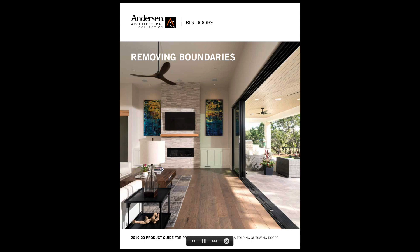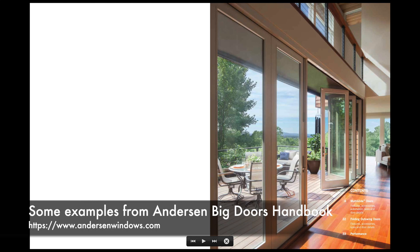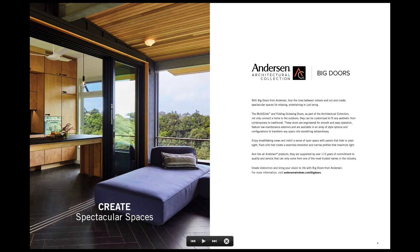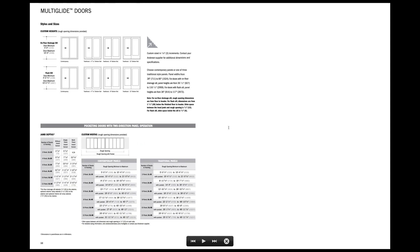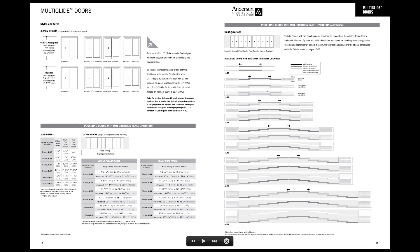In this video we're going to look at the new features of VectorWorks 2021 regarding BIM features, particularly pocket and sliding doors. VectorWorks has always been able to do pocket and sliding door configurations, but configurations beyond four panels for large door openings like multi-glide doors weren't possible. Now we can do pretty much unlimited sets of sliding and bifolding doors, so that's what I want to focus on in this video.